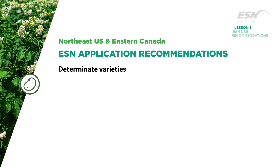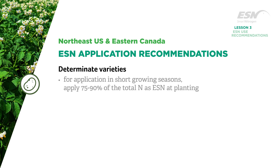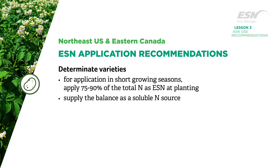For determinate varieties and/or short growing seasons in the Northeastern US and Eastern Canada, apply 75 to 90 percent of the total nitrogen as ESN at planting. Supply the balance as a soluble nitrogen source; in most cases further nitrogen is not required.